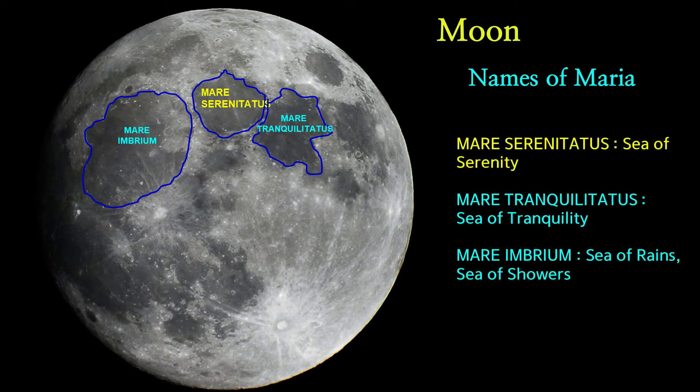Mare Serenitatis. Mare means sea, ocean. Please remember, Mare is the same as sea or ocean with no water. A Mare or sea is a volcanic lava plain, noticeably darker than the rest of the Moon's surface. Mare Serenitatis means the Sea of Serenity.